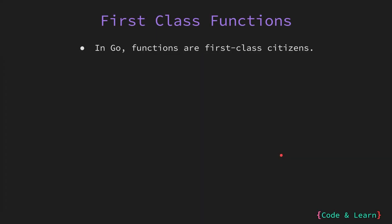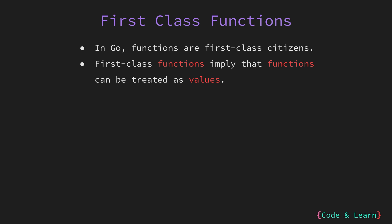As I've already mentioned, functions are first class citizens in Go. This means in Go, functions are treated like any other data such as integers or strings. You can assign a function to a variable just like you would do with a number or a string or any other value. This means you can store a function in a variable and use it later.